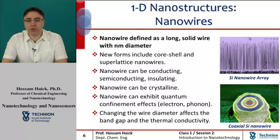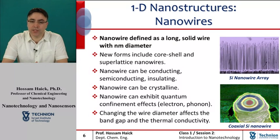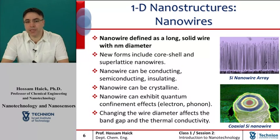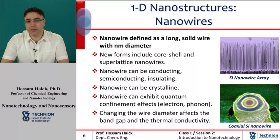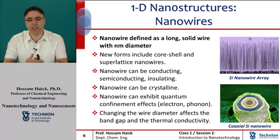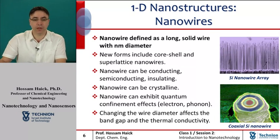Nanowires have two quantum-confined directions, while still leaving one unconfined direction for electrical conduction. This feature allows nanowires to be used in applications where electrical conduction is required. Because of their unique density of electron states, nanowires in the limit of small diameters are expected to exhibit significantly different optical, electrical, and magnetic properties from their bulk three-dimensional crystalline counterparts.